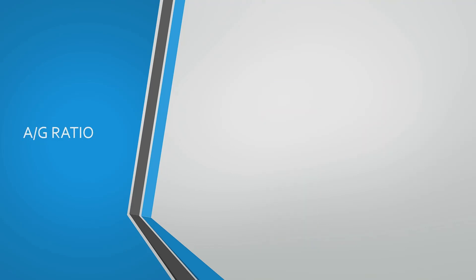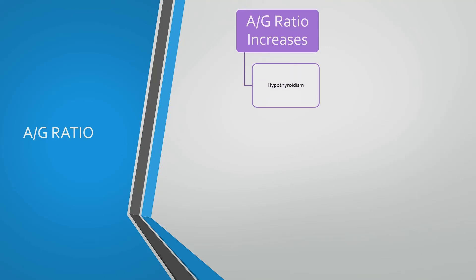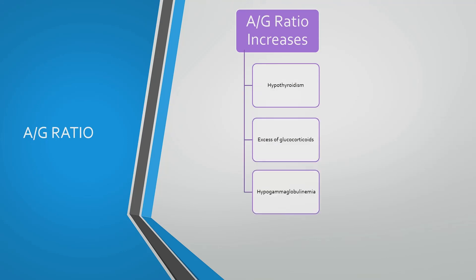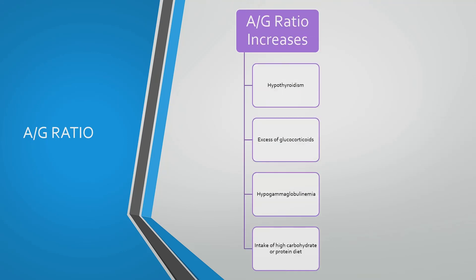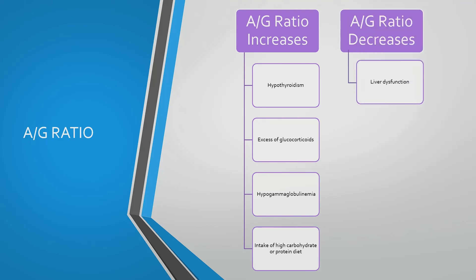Lastly, let's see the variations in albumin to globulin ratio. The A:G ratio increases in the following conditions: hypothyroidism, excess of glucocorticoids, hypogammaglobulinemia, and intake of high carbohydrate or protein diet. The A:G ratio decreases in the following conditions: liver dysfunction and nephrosis.